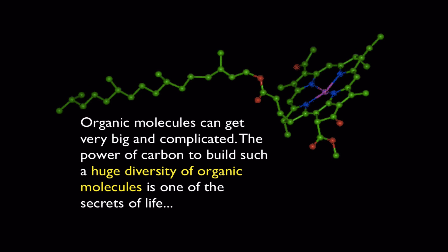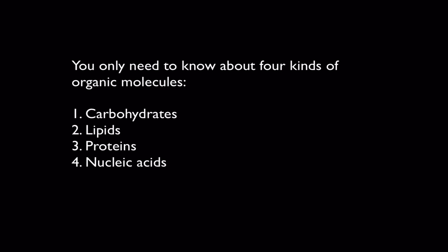Now, organic molecules can get very big and very complicated. And this ability or power of carbon to build such a huge diversity of organic molecules is one of the secrets of organic chemistry. And, of course, organic chemistry is where biology comes from. And we're going to talk about four different kinds of organic molecules in this unit. We're going to talk about carbohydrates and proteins, which you probably have heard about in foods. Lipids, which you also have heard about. They're also known as oils and fats. And, finally, the last group, nucleic acids, which are DNA and RNA.